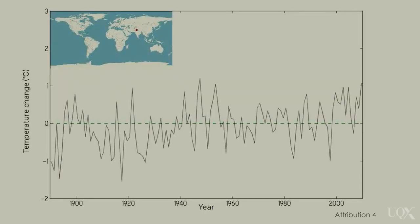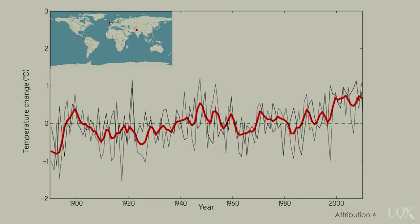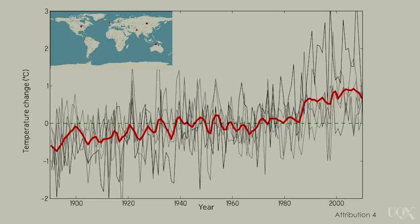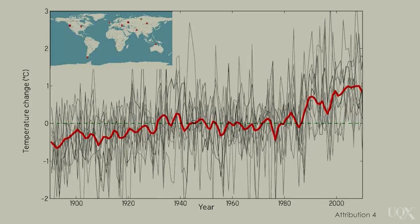If we look at weather records for different places around the world, they all show different things. That's because weather varies from place to place. But there is a pattern. Most show some kind of warming.